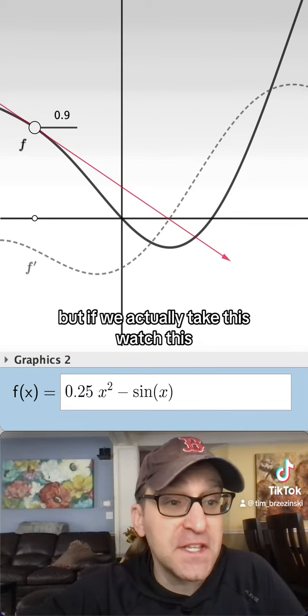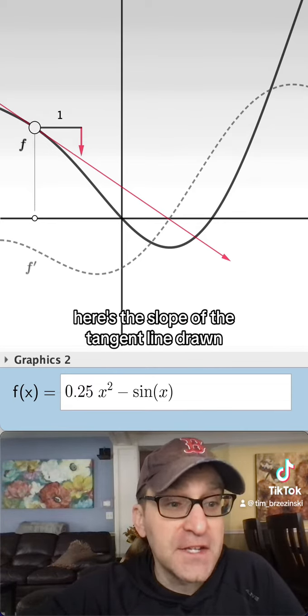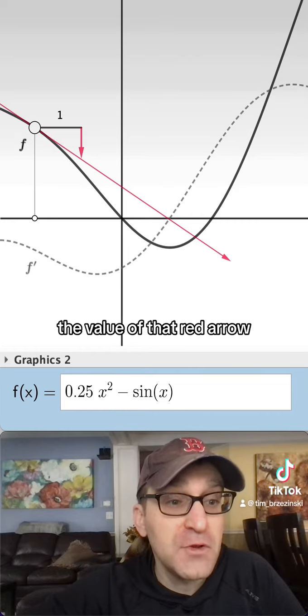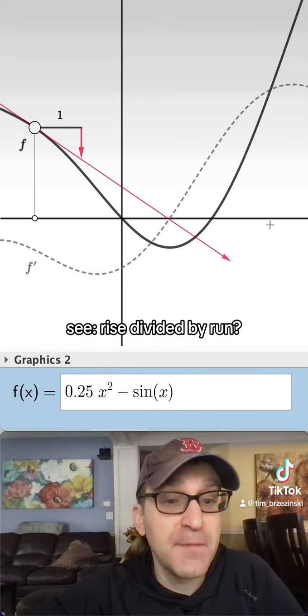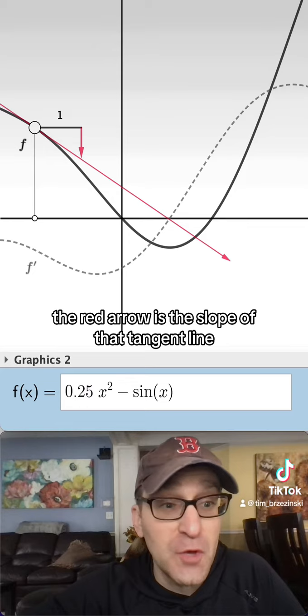But if we actually take this, watch this, here's the slope of the tangent line drawing the f right there. The value of that red arrow, see rise divided by run, the red arrow is the slope of that tangent line.